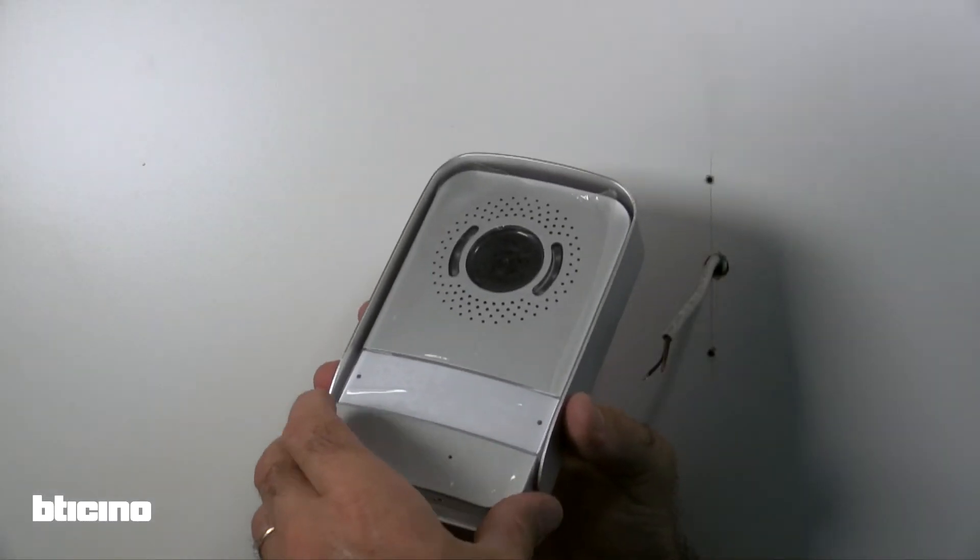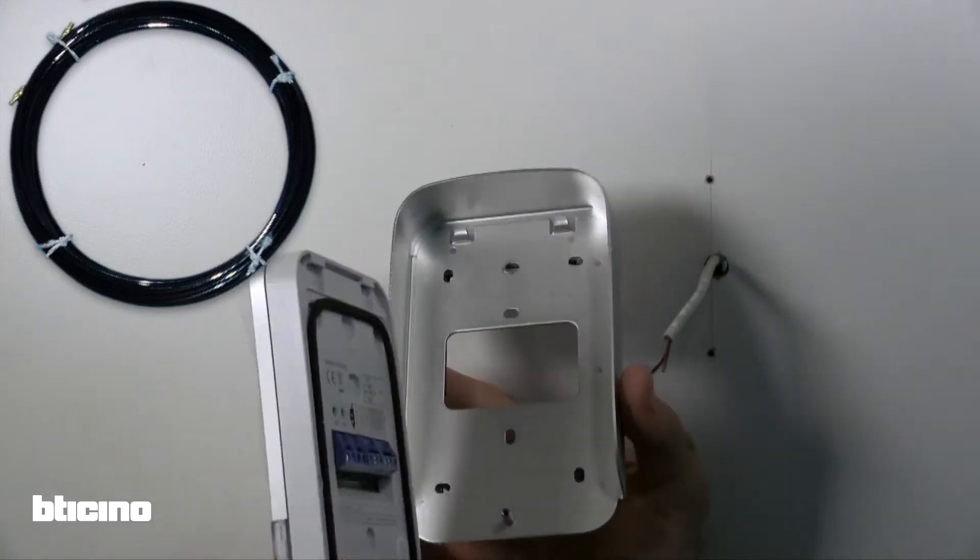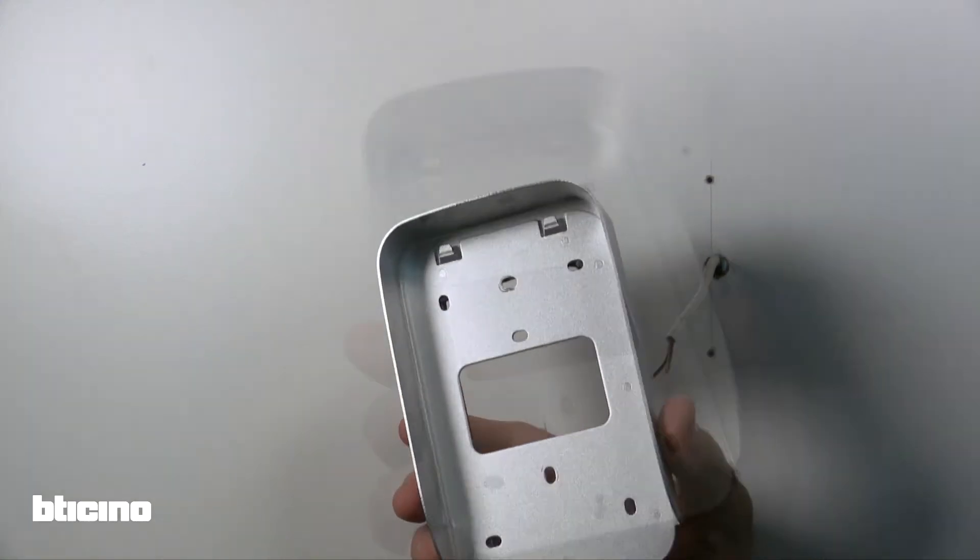Using the probe, feed the cable from the hands-free internal unit to the location of the connected outdoor unit.